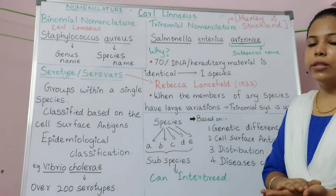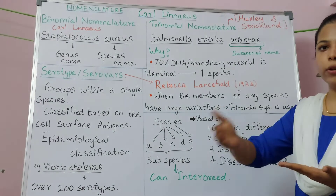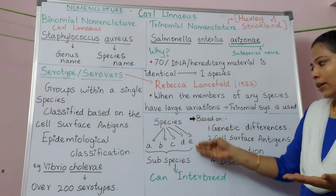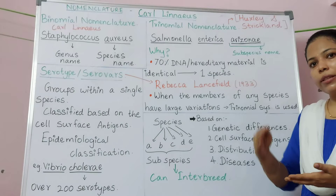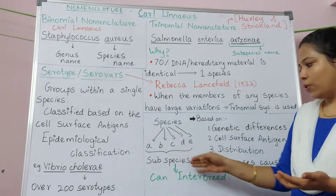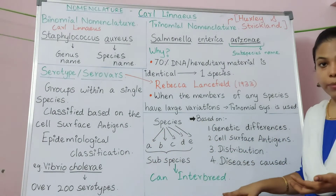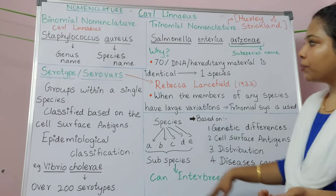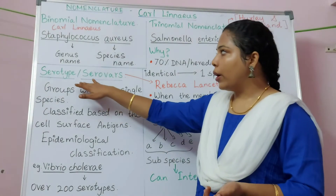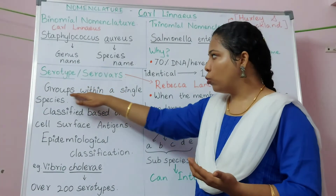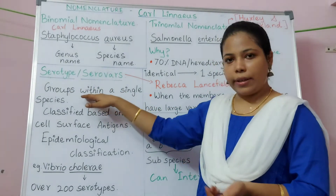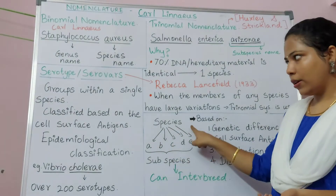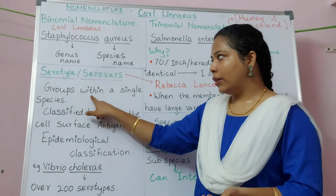Organisms kept under a species can breed and reproduce among themselves, and since subspecies is just a classification under species, they can also interbreed. The serotype refers to groups within a single species — this classification is based on the cell surface antigens present on the surface of the microorganisms.